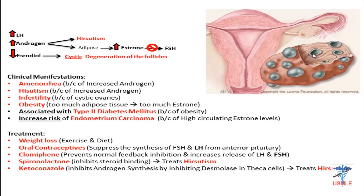We can also use spironolactone, which is a potassium-sparing diuretic. It's an aldosterone receptor antagonist, but it's also anti-androgenic, so we can use it to treat hirsutism. We can also use ketoconazole, which is an antifungal drug. It inhibits production of ergosterol, unique to the fungal membrane. Additionally, it inhibits androgen synthesis by inhibiting the desmolase enzyme in the theca cells, and we can also use this to treat hirsutism.